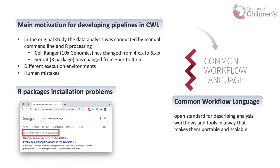First of all, because of changes in the tools and libraries. For example, CellRanger, one of the most commonly used tools for single-cell data alignment, has already got at least two major updates since the time the original study had been conducted. Another tool, called Seurat, is a state-of-the-art R package for single-cell data integration and clustering, and it also got a major update that is not fully compatible with the previous version.